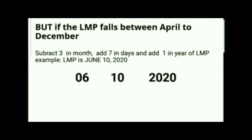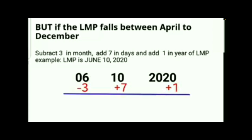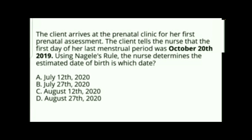If the LMP falls between April to December, stick with the standard Nagel's formula: minus 3, plus 7, plus 1. Example: LMP is June 10, 2020. Written as 6, 10, 2020. Applying the formula: 6 minus 3 is 3 (March), 10 plus 7 is 17, and 2020 plus 1 is 2021. So she will give birth on March 17, 2021.